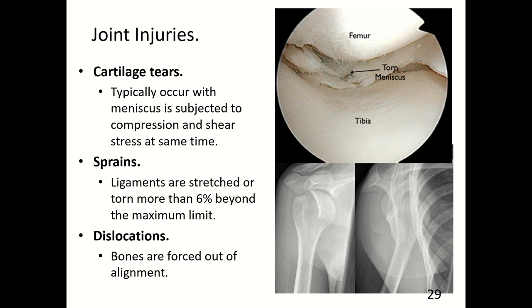Joint injuries occur because the soft tissues of the joints can hold them together only to a limit. Cartilage tears typically occur when the meniscus is subjected to compression and shear stress simultaneously. Sprains occur when ligaments are stretched or torn more than 6% beyond the maximum limit. Dislocations occur when the bones are forced out of alignment, and they can lead to further injury as the soft tissue is stretched and weakened.